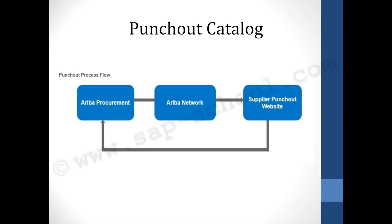The punch-out catalog allows you to create a PO or shopping cart from the Ariba system, which then takes you to the Ariba network and further to the supplier's website — for example, a Staples website where they maintain all their products. The Ariba system provides your way back so you can select items from the supplier catalog, and those items are sent back to the Ariba system. From there, all data goes back to the SRM system, or if integrated with ECC directly, it goes back to the ECC system.